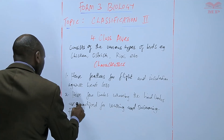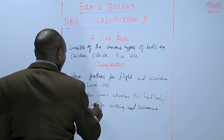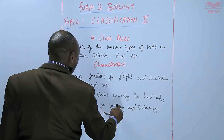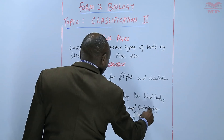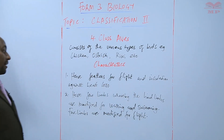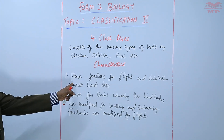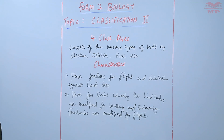The forelimbs are modified for flight. The forelimbs are where the feathers are attached, and they are modified for flight, as we have seen that the feathers are for flight and insulation against heat loss.